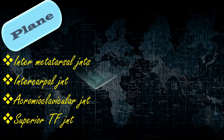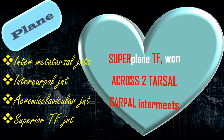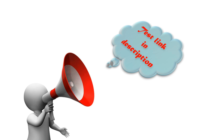Next one: plane joints. The story is: superplane TF wound across two tarsal carpal intermates. Super is for superior, TF is for tibio-fibular joint — so superior tibio-fibular joint. Across is for acromioclavicular joint. Two tarsal carpal intermates — one is intercarpal joint and another is intermetatarsal joint. Please repeat and listen to the stories carefully, because this is a frequently asked MCQ.